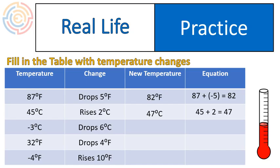Negative 3 degrees Celsius, dropping 6 degrees, would drop down to negative 9. That would look like this. Negative 3 plus negative 6 equals negative 9. Great example of when the signs are the same, you find the sum. Add up the numbers. Keep the sign.